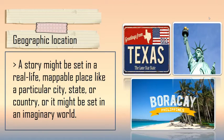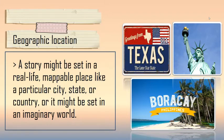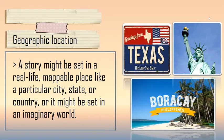The first element of settings is geographic location. A story might be set in a real-life, mappable place like a particular city, state, or country, or it might be set in an imaginary world. Examples of this are the city of Texas, city of New York, and also our very own Burakai, Philippines. Texas is chosen because of its very famous food, which is beef, and New York because of its famous Statue of Liberty. Burakai is chosen because of its white sands and many tourist spots.